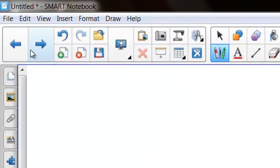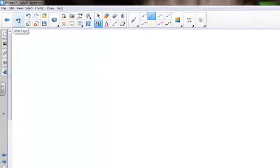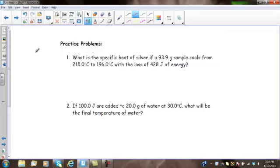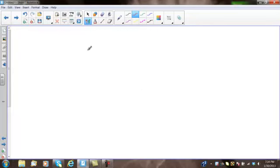What is the specific heat of silver if a 93.9 gram sample cools? I want to show you, or recall, how we manipulate a formula. In the last problem, we solved for Q. It was easy. We just multiplied mass times specific heat times delta T. But, what if I ask you to find the mass? Now, it's not so easy.